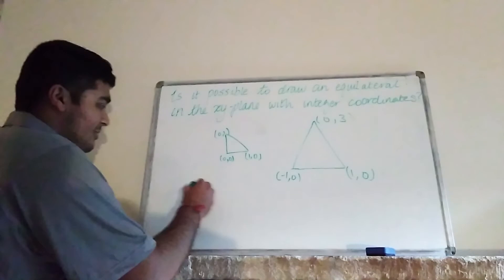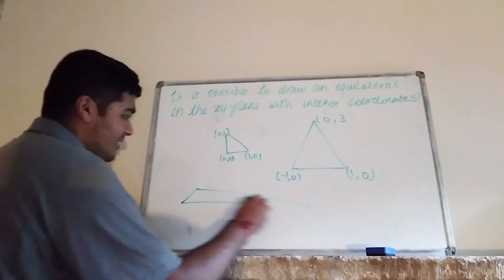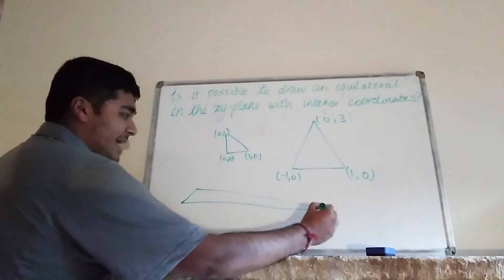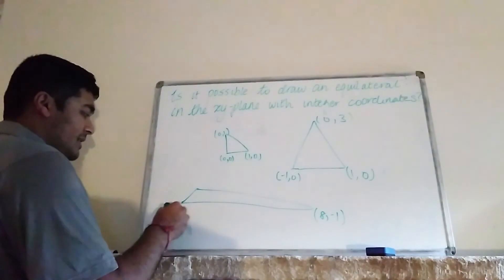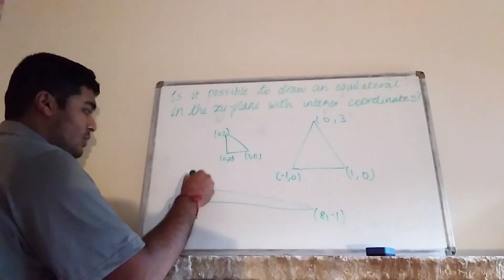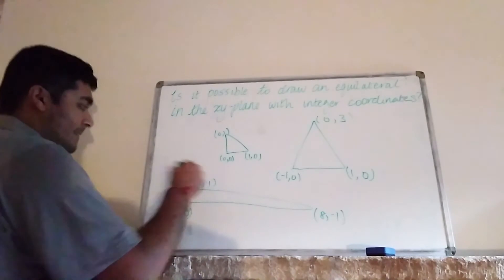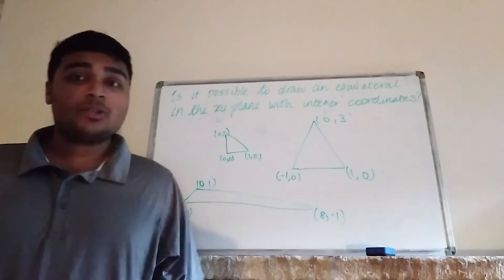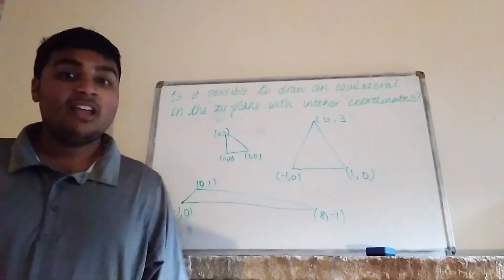And of course we can just do scalene ones as well — take this rogue-looking triangle here. But we want to know: can we do the same thing for equilateral triangles?